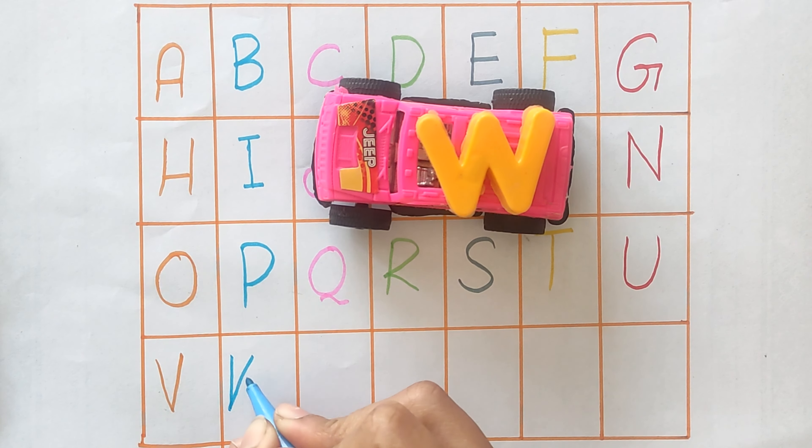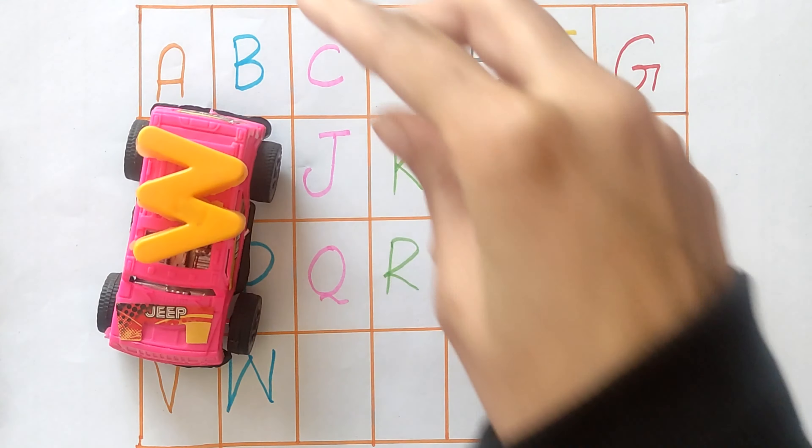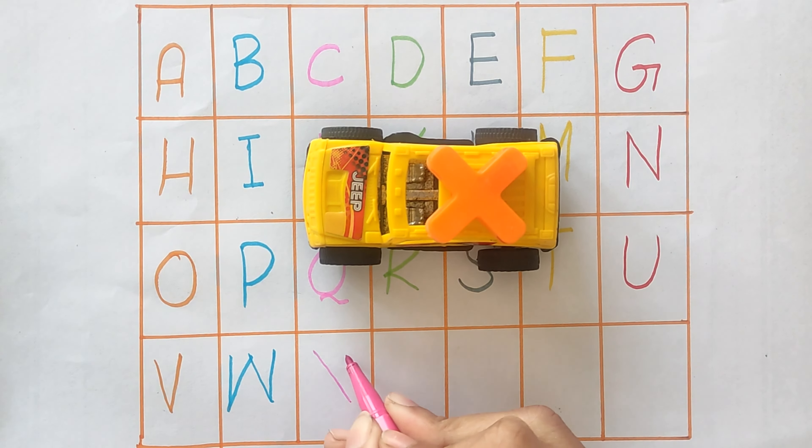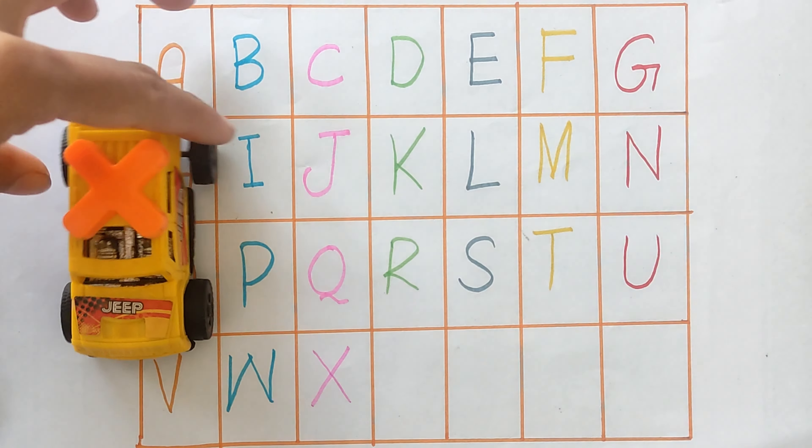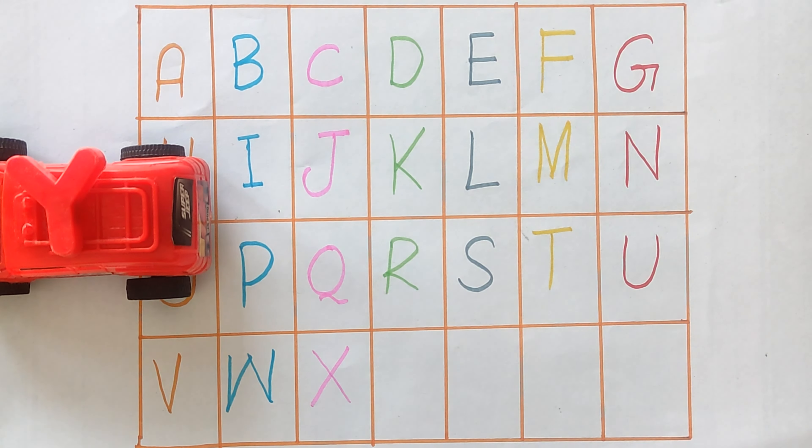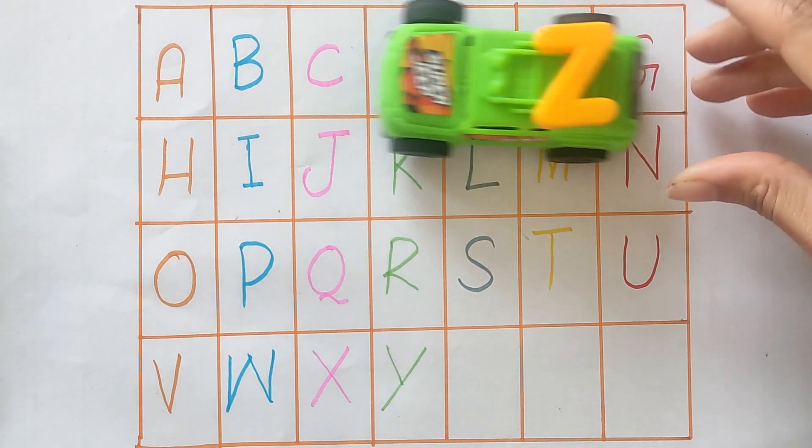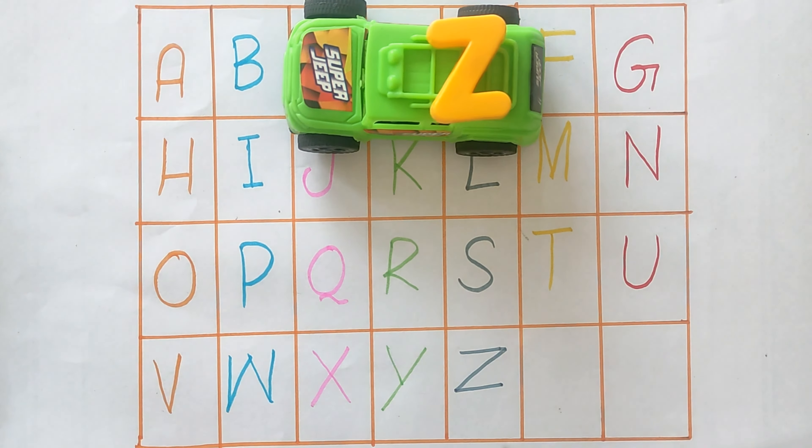W, W for watch. X, X for x-ray. Y, Y for yard. Z, Z for zebra.